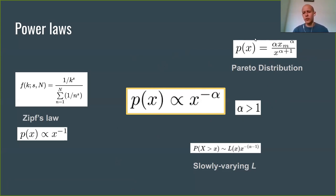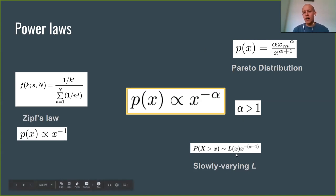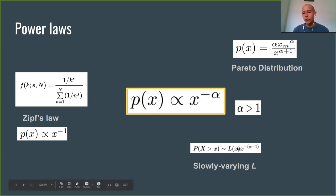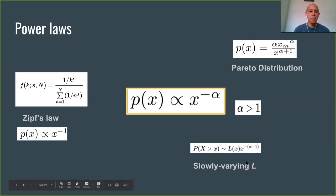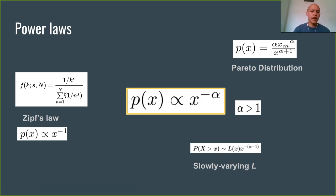For instance, the Pareto distribution, which was originally used to describe income, starts being defined at some minimum value x_min. A more general way of talking about scaling laws is talking about the scaling of simply the tail of the distribution — the largest numbers. You usually talk about a slowly varying function: when you have a really large x, the scaling law dominates. One very common way to talk about scaling laws is Zipf's law.